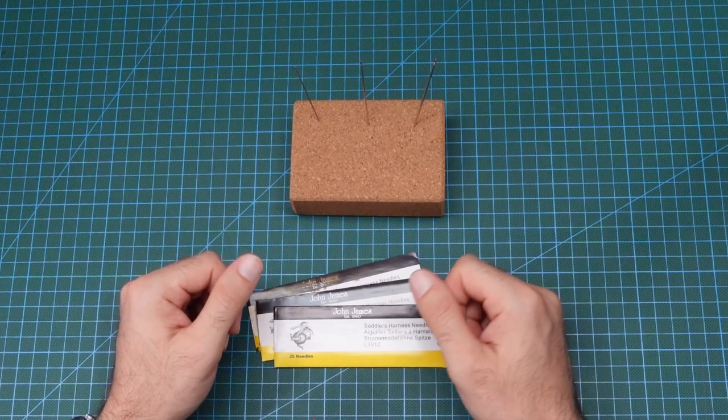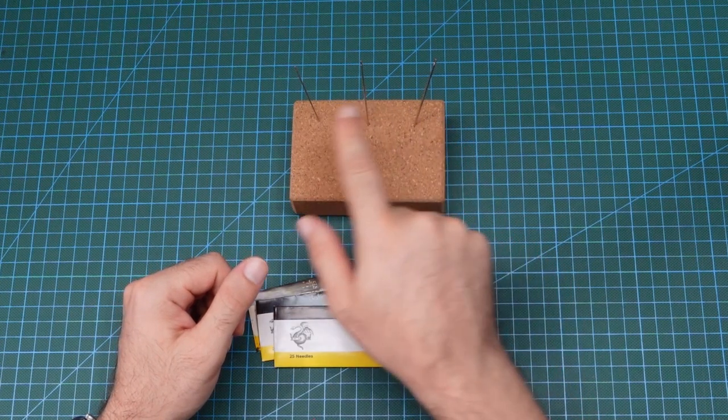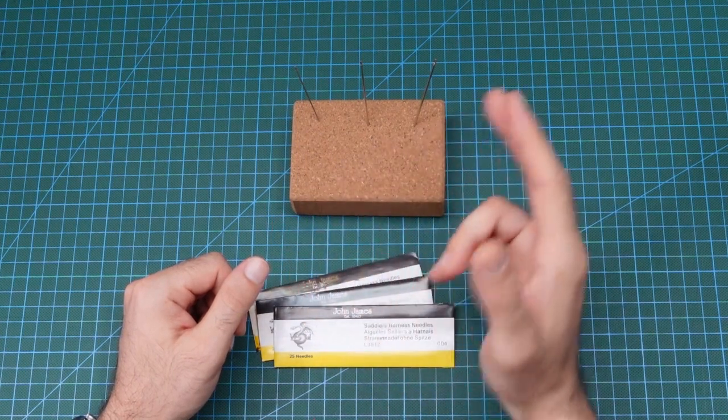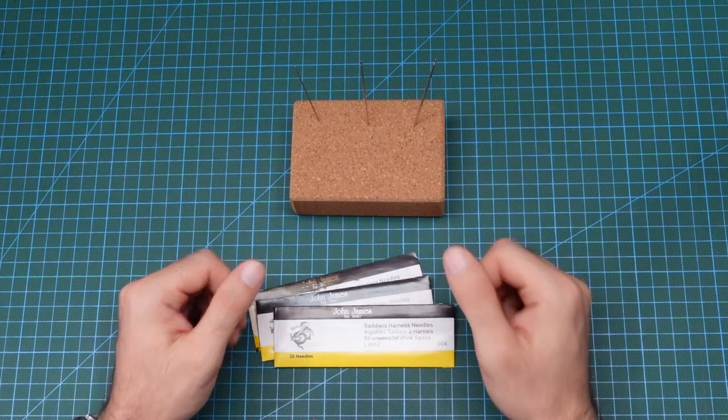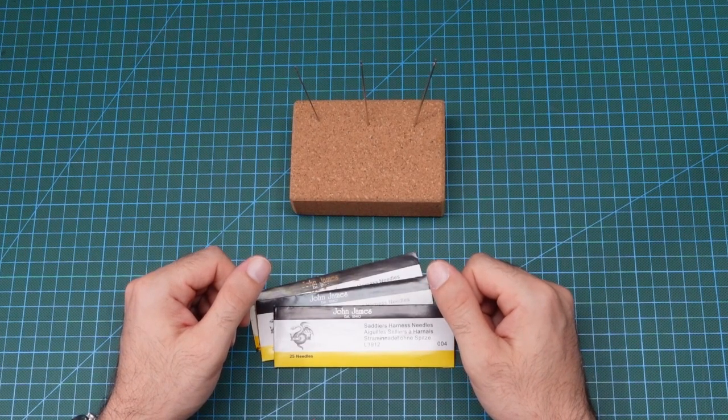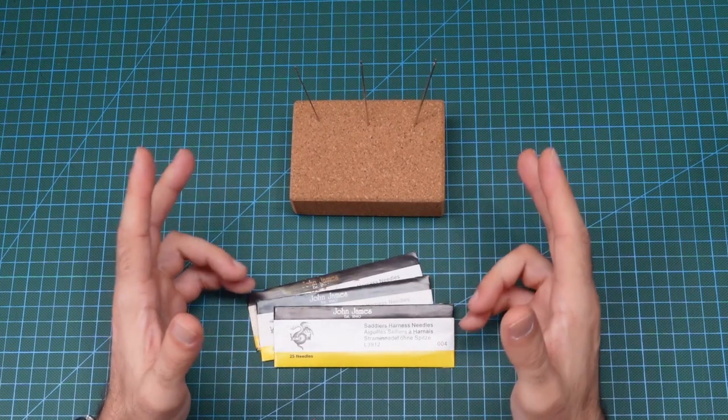As a general rule for choosing your needle size, you should always be going with the smaller size that can still fit the thread that you are using. The smaller the size of the needle, the smaller the eye of the needle will be, which is going to make it easier to pass through holes and will not stretch out the leather.